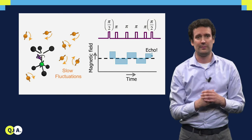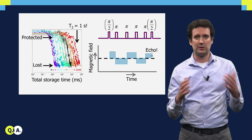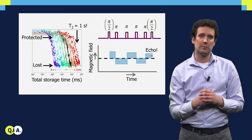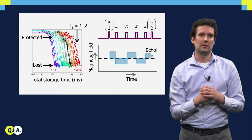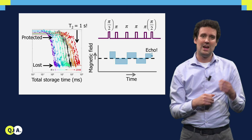Now, in this graph you can see that this works. We bring the electron spin in a superposition, and as we apply more and more pulses, we protect the electron spin longer and longer. In this way we can even protect the quantum state for over a second — over macroscopic timescales and about 6 orders of magnitude better than without flipping the electron spin. So we have very good coherence for the electron spin.